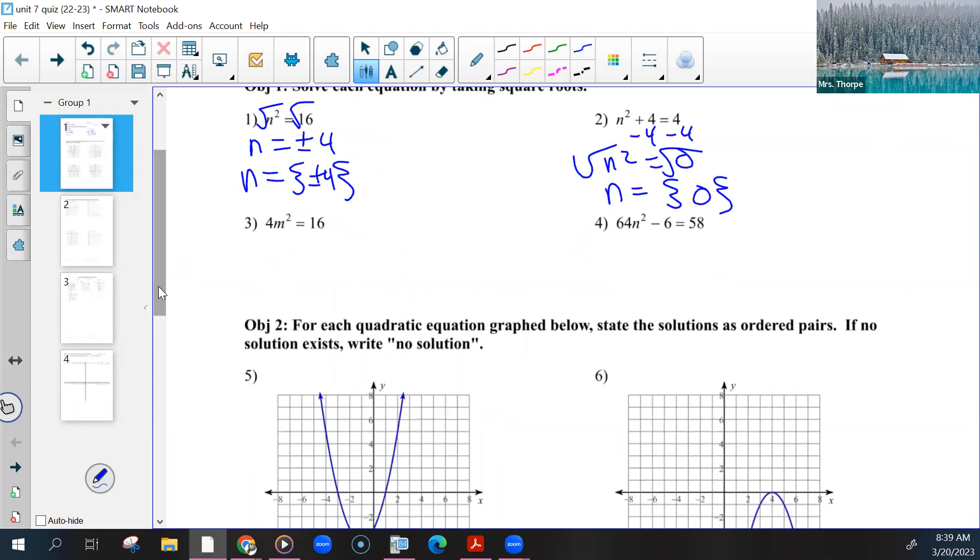Problem three: Some of you divided by four and then took the square root. That can work, but you got lucky that it worked, because that won't always work. So divide both sides by four, then take the square root. So plus or minus two. Some of you got four, and I think you either forgot to take the square root or something happened there. Be careful.